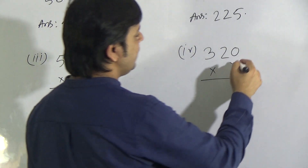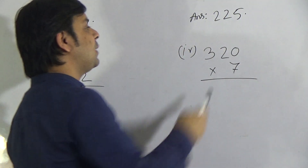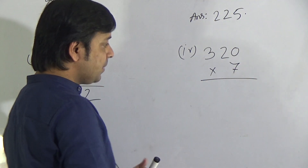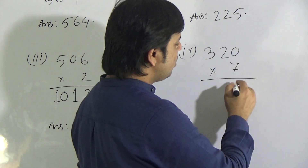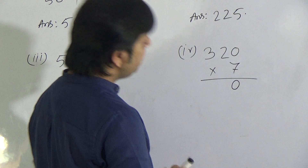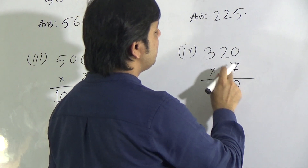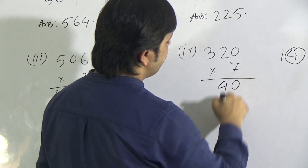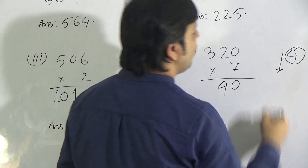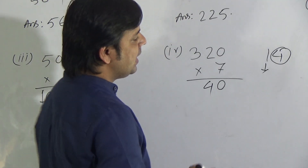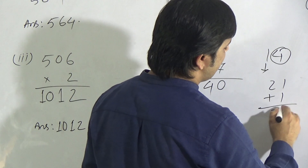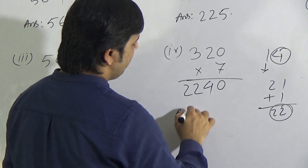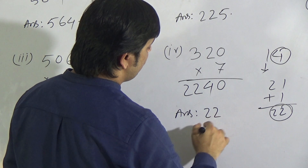Now see question 4. We have to multiply 320 by 7. First multiply the 1's place, then the 10's place, then the 100's place. 7 0's are 0, so we write 0. Then the 10's place: 7 2's are 14, write 4 and carry 1. Then the 100's place: 7 3's are 21, plus carrying 1 gives 22. As no digit remains on the left side, we write 22. So the required product for question 4 is 2240.